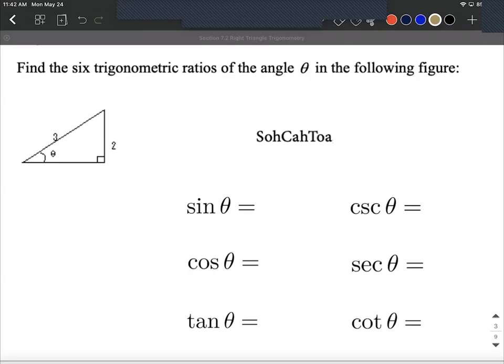We're given a right triangle, and our goal is to find the six trigonometric ratios based on this triangle. We have two of the side lengths given to us, actually a side length and the hypotenuse, and we want to find sine, cosine, tangent, cosecant.